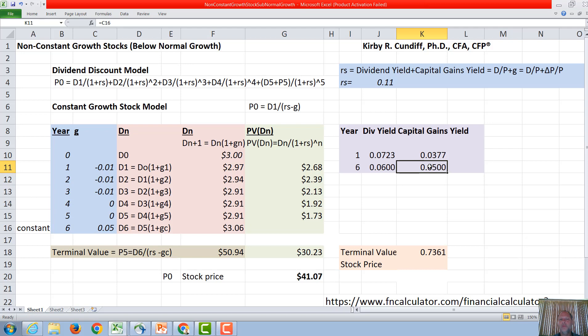So eventually, it's going to converge here to our 5%, our constant growth rate. But before that, in this example, it will be below that since we have a subnormal growth stock. So in our initial year, we can say that the dividend yield will equal next year's dividend of 2.97 divided by the current stock price of $41.07, which gives us 0.0723. Well, we know the dividend yield plus the capital gains yield has to equal the required rate of return at 11%. So the capital gains yield will equal 11% minus the 7.23%, or 0.0377.